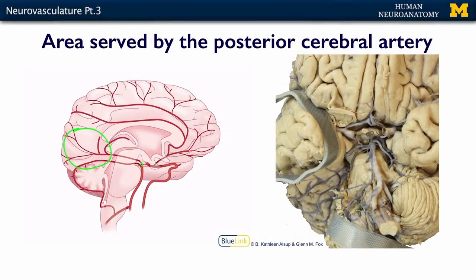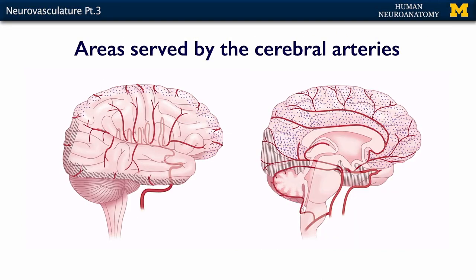The next thing I want to show you is a comparison of the overall watershed areas or perfusion areas of these arteries. This slide demonstrates the overlap and the areas served by each of the major arteries. The middle cerebral artery perfuses most of the lateral surface of the brain, and the anterior cerebral artery perfuses most of the medial surface of the brain.